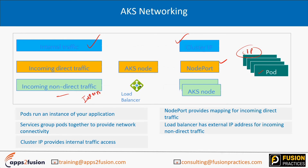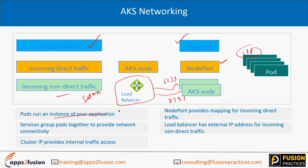If you have non-direct traffic coming from the internet and want to redirect it, you can leverage a load balancer. With a load balancer, you can have AKS nodes connecting on different ports — for example, one connecting on port 6233 and another on port 8737.